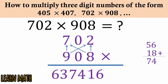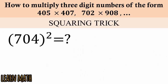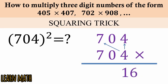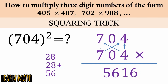How to use this trick for squaring? For 704 squared: 4 into 4 is 16, then 4 into 7 is 28 and 7 into 4 is 28, giving 56. Write 56 here. And 7 into 7 is 49 — so 495616 is the answer.